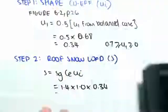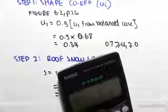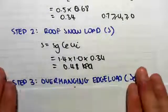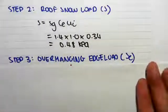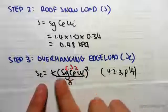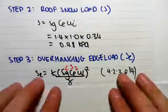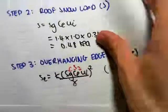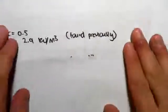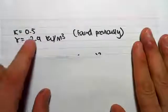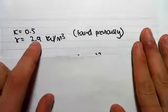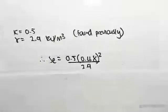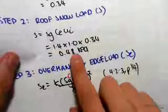We can then simplify the overhanging snow, the overhanging edge load, which is this formula we've seen before. We've found k and alpha, we know what they are. So k and alpha we've found previously: k was 0.5, gamma is 2.9 kilonewtons per meter cubed. So just substituting in those values, 0.5 by 0.48...